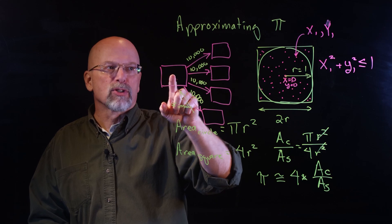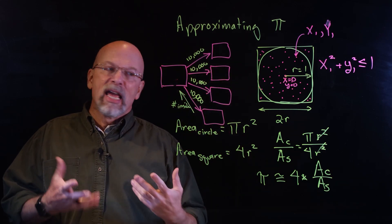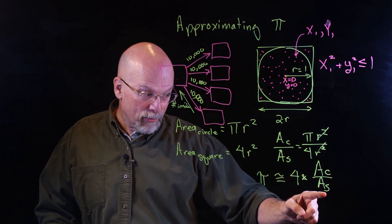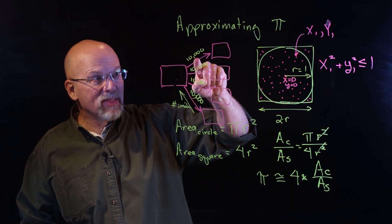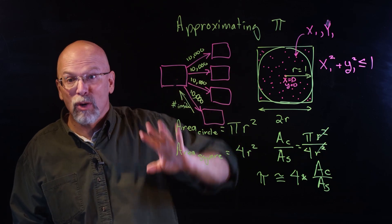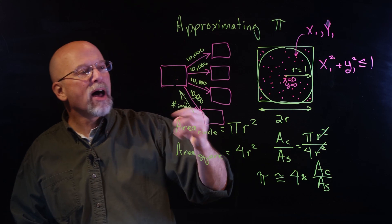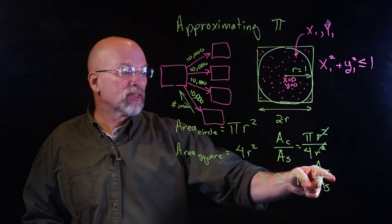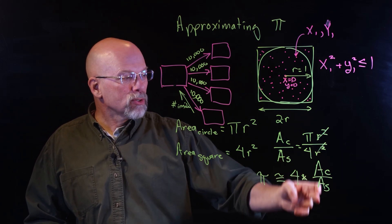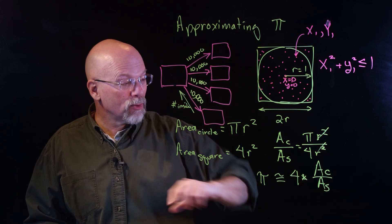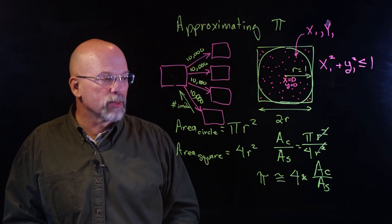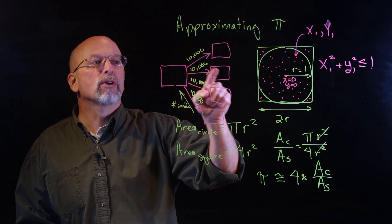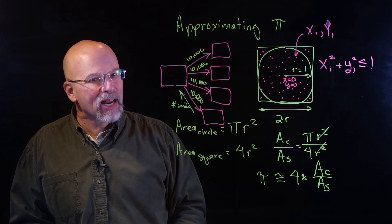The controlling node combines its own results with the results returned from each node to come up with the ratio. So that's 10,000 points per node times five nodes — 50,000 total. It sums all the integers that came back along with its own computation to get the total points inside the circle, takes the ratio, and multiplies by four to get an approximation of pi. What makes this really nice as a parallelized problem is the low communication overhead — we'll see with the next example that's not always the case.